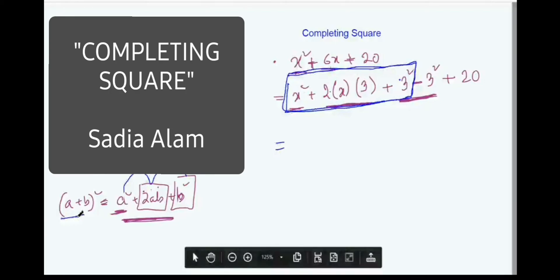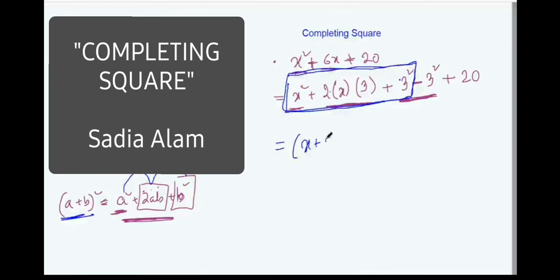Right, so a is x, b is 3, so a plus b whole square. You are done with this thing. The entire box is within this thing: x plus three whole square.